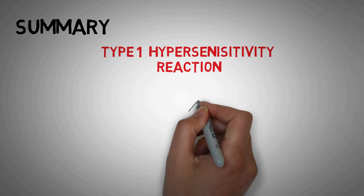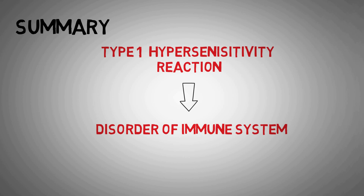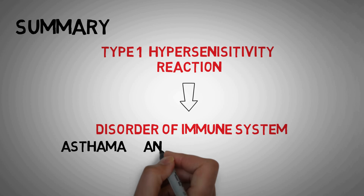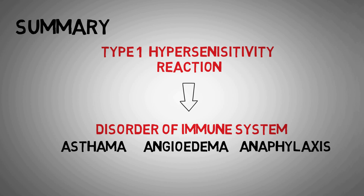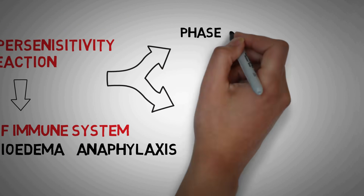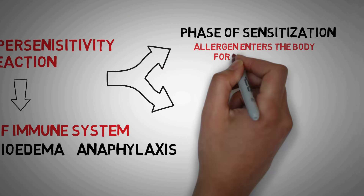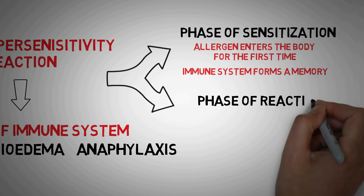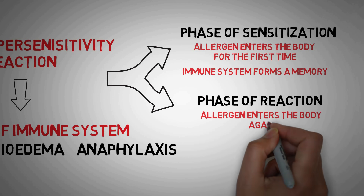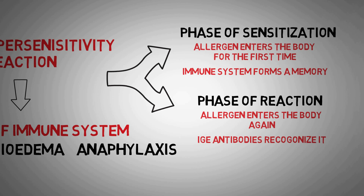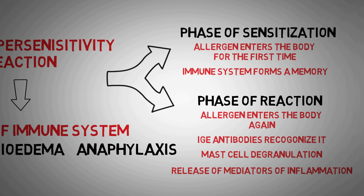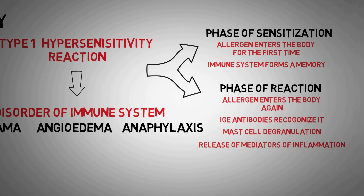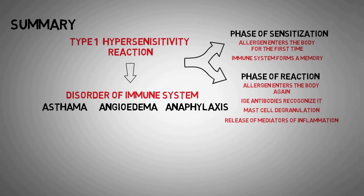To summarize, type 1 reaction is a disorder of the immune system that can lead to many important medical conditions like asthma, angioedema, anaphylaxis, food allergies, and more. It involves two important phases: a phase of sensitization in which the allergen enters the body for the first time and our immune system forms a memory of this allergen, and a phase of reaction which begins when the allergen enters the body again. It is quickly recognized by IgE antibodies bound to mast cells, which signal these cells to release huge amounts of chemicals like histamine, serotonin, and prostaglandins, leading to symptoms like itching, pain, redness, swelling, and smooth muscle spasms.